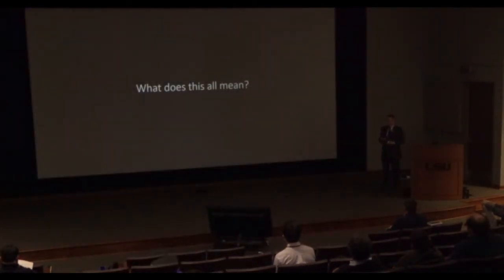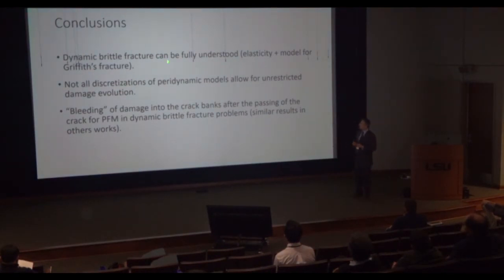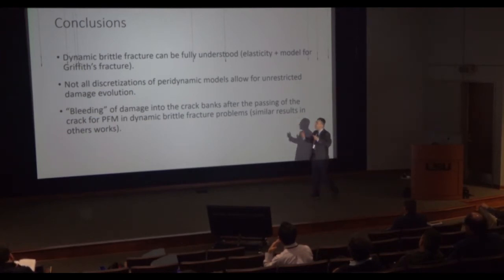So, what does it all mean? I think we can really understand the dynamic brittle fracture as long as you use elasticity, for glass it's linear elasticity is fine, and a model that really correctly implements Griffith fracture and it's not constrained by ad hoc assumptions or geometry discretization conditions. Not all discretizations of peridynamic models allow for this unrestricted damage evolution. You could do a finite element discretization of peridynamic model, but when it comes to damage, it's not easy to come up with something that will work.